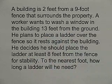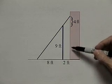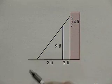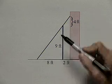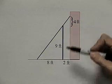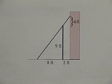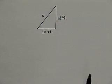Let's look at another example application. A building is 2 feet from a 9 foot fence that surrounds a property. A worker wants to wash a window in the building 13 feet from the ground. He plans to place a ladder over the fence so it rests against the building. He decides he should place the ladder at least 8 feet from the fence for stability. To the nearest foot, how long a ladder will he need? Well, we definitely need to look at a picture to give us an idea of what's necessary here. So here's a picture. This part is the building. Here's the fence. This angled line represents the ladder. Notice that the ladder is 8 feet from the fence. And then the fence itself is 2 feet from the building. The fence is 9 feet itself. And the window that he needs to wash is 13 feet above the ground.